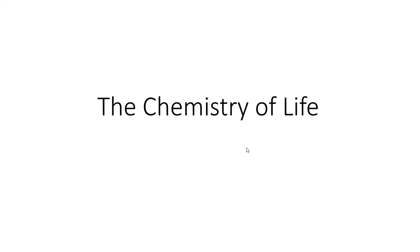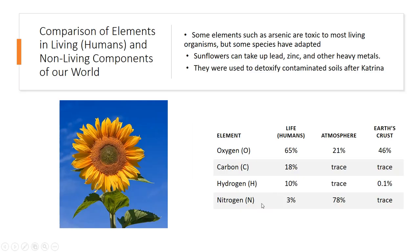Today we're going to talk about the chemistry of life. Both organic and inorganic forms are made up of four main elements: oxygen, carbon, hydrogen, and nitrogen. Oxygen makes up about 65% of living organisms, while the atmosphere is 21% oxygen and Earth's crust is 46% oxygen.